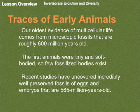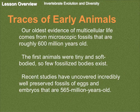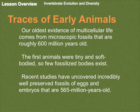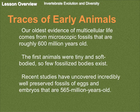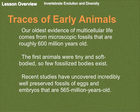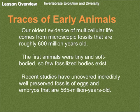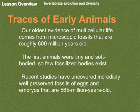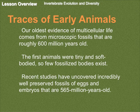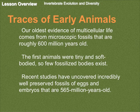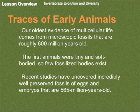Our oldest evidence of multicellular life comes from microscopic fossils that are roughly 600 million years old. Someone asked me the other day how you find microscopic fossils — I'm not sure, you just look really hard, I guess. The first animals were tiny and soft-bodied, so few fossilized bodies exist. Recent studies have uncovered incredibly well-preserved fossils of eggs and embryos that are 565 million years old. I'm hoping we have time this year to go into how these things are aged and the controversy there. I want you to realize that just because someone tells you something is 565 million years old, there are still not completely proven ways of doing this.